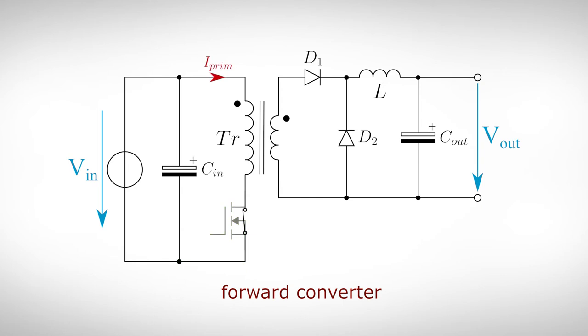If the MOSFET switches on, a current starts to flow into the primary winding. Due to its inductance, the current rises linearly and generates a magnetic flux. This flux again generates a current into the secondary winding. The value of the induced current depends on the turn ratio between the primary and the secondary side. The diode D1 allows the current to flow through the inductor on the secondary side and to build up a magnetic field in its core.